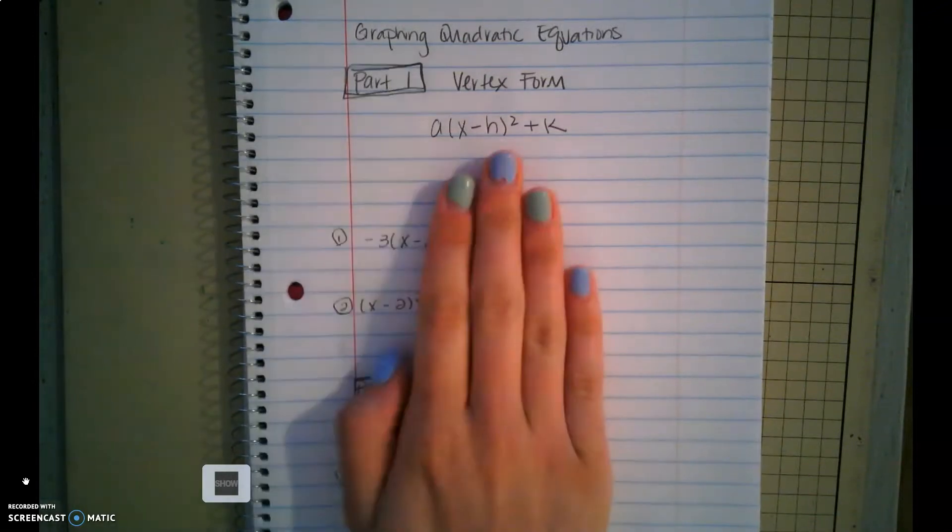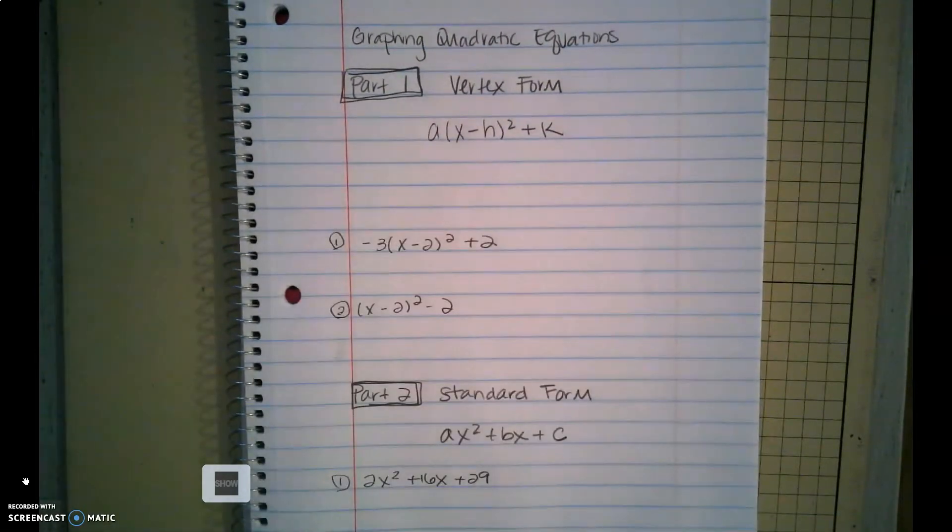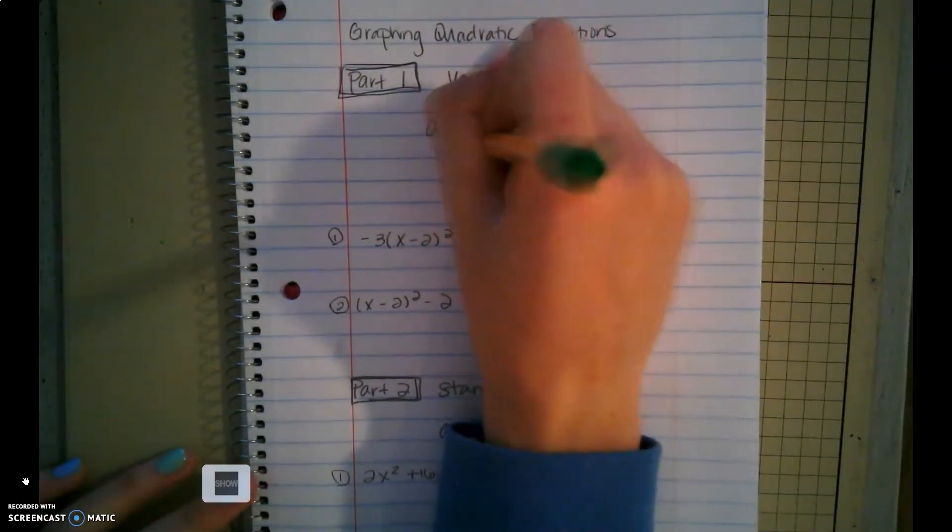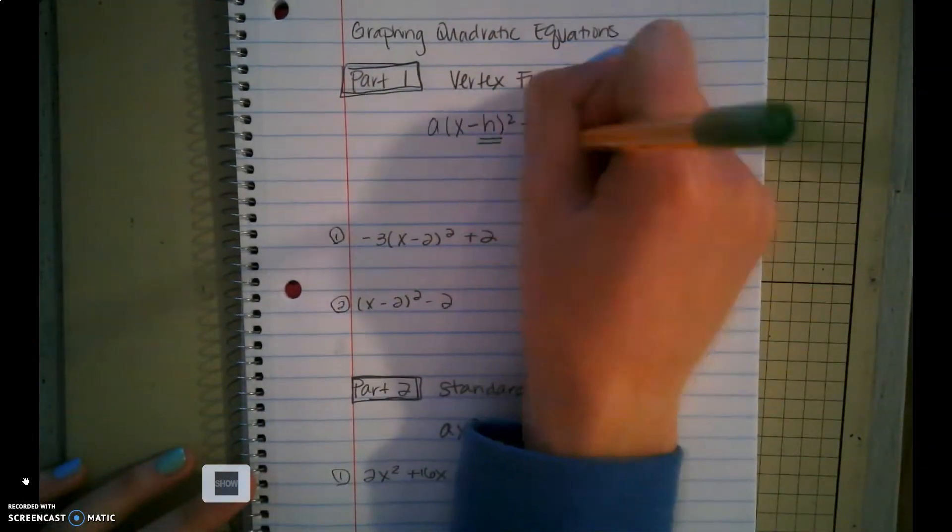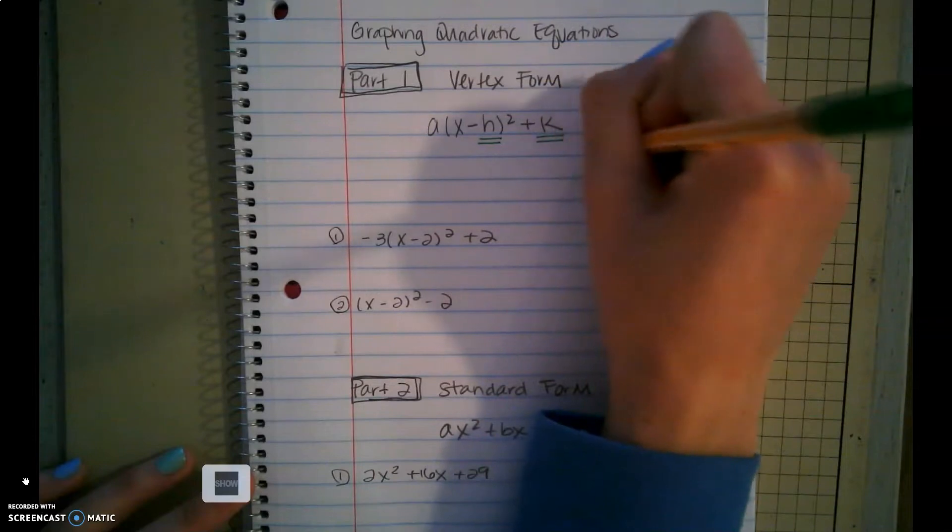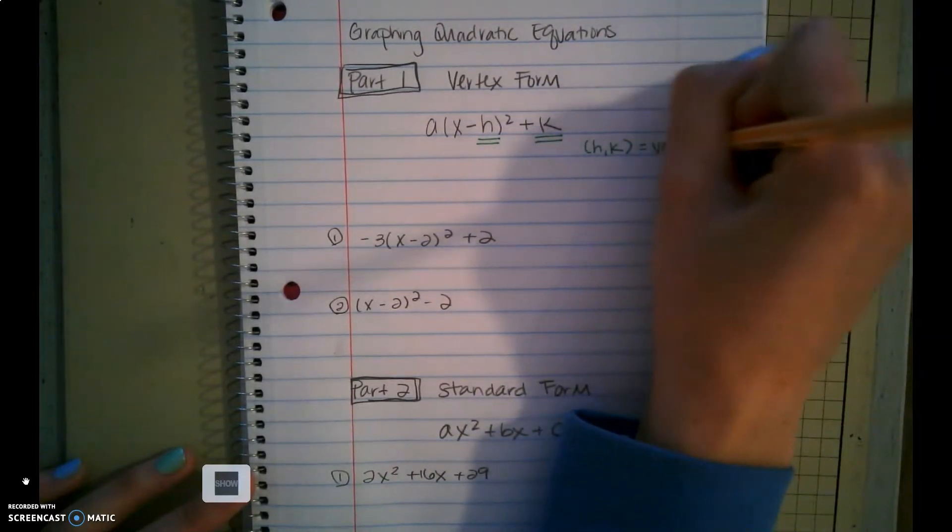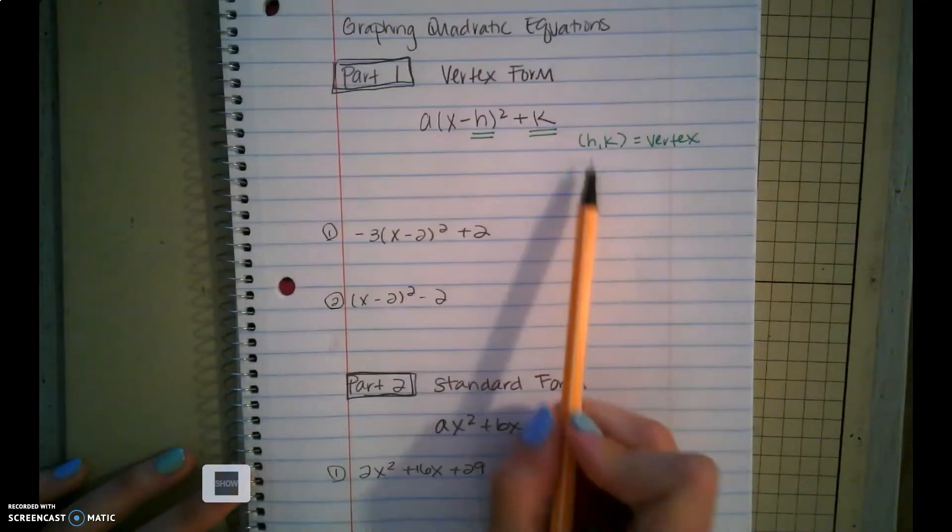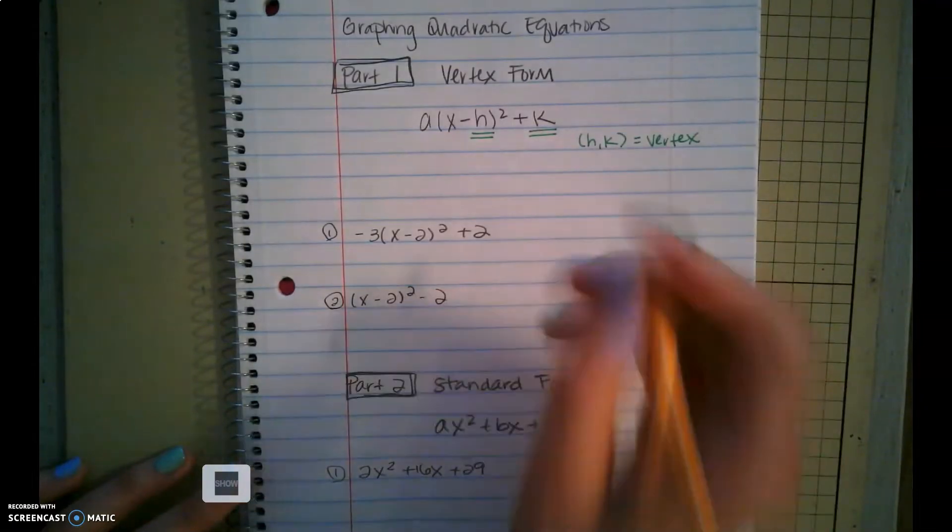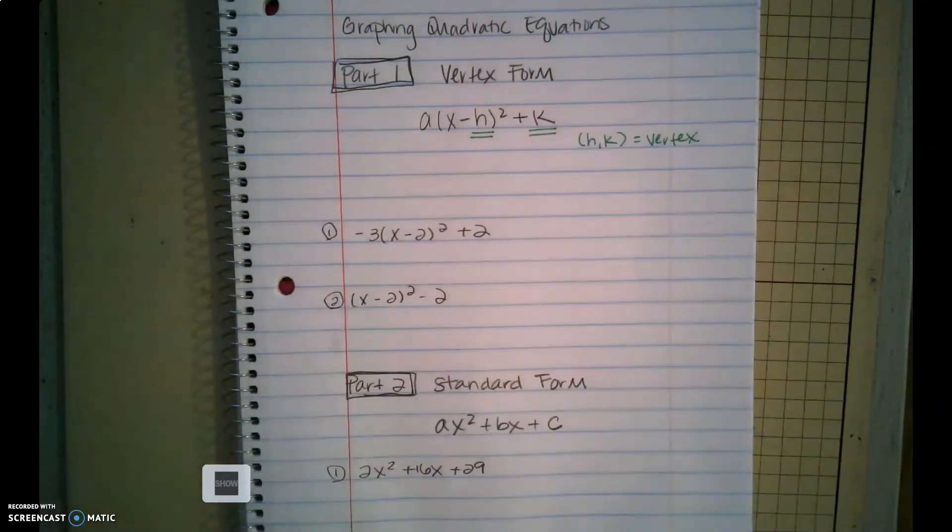So the first one that we're going to practice graphing is in vertex form. In vertex form, this is the easiest form to graph from because they've given us the vertex. Remember that H and K represent the vertex. Remember also we do the opposite of H, so we always think of the opposite sign.